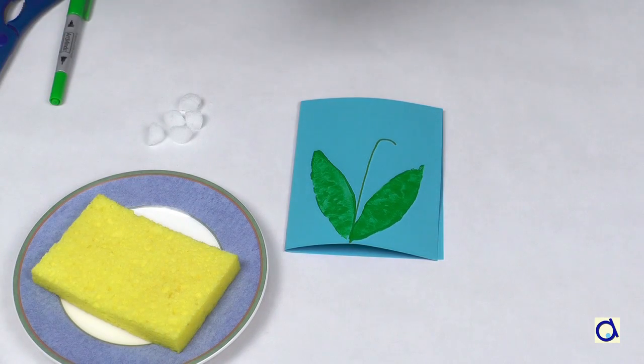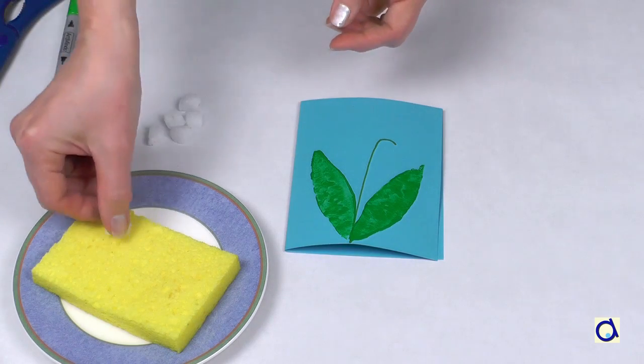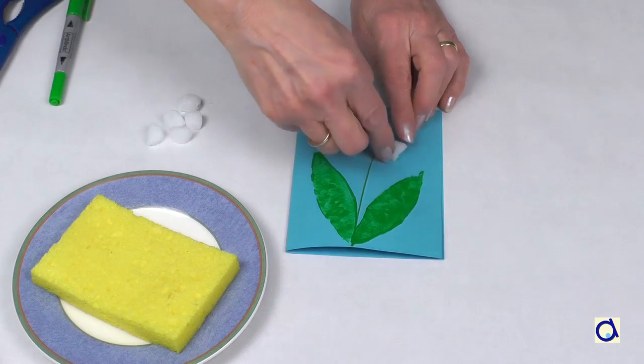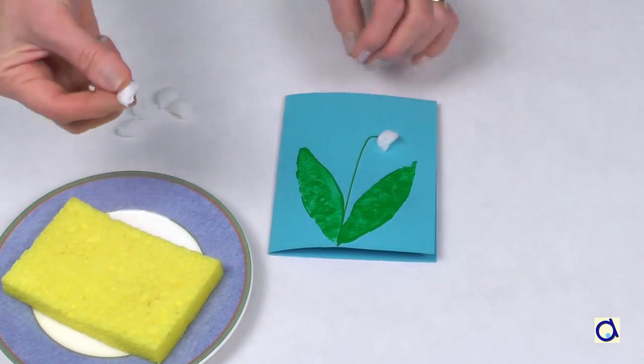Place a sponge in a saucer with a little bit of water. Take a piece of magic noodle and press it gently on the wet sponge, and then place the bell at the top of the stem of the lily.